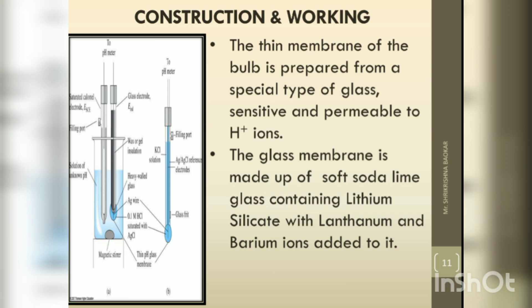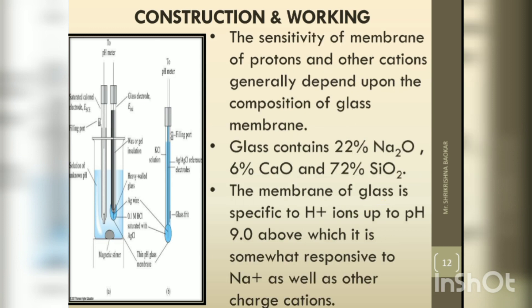The thin membrane of the bulb is prepared from a special type of glass which is sensitive and permeable to H+ ions. The glass membrane is made up of soft soda lime glass containing lithium silicate with lanthanum and barium ions. The sensitivity of the membrane to protons and other cations generally depends upon the composition of the glass membrane.